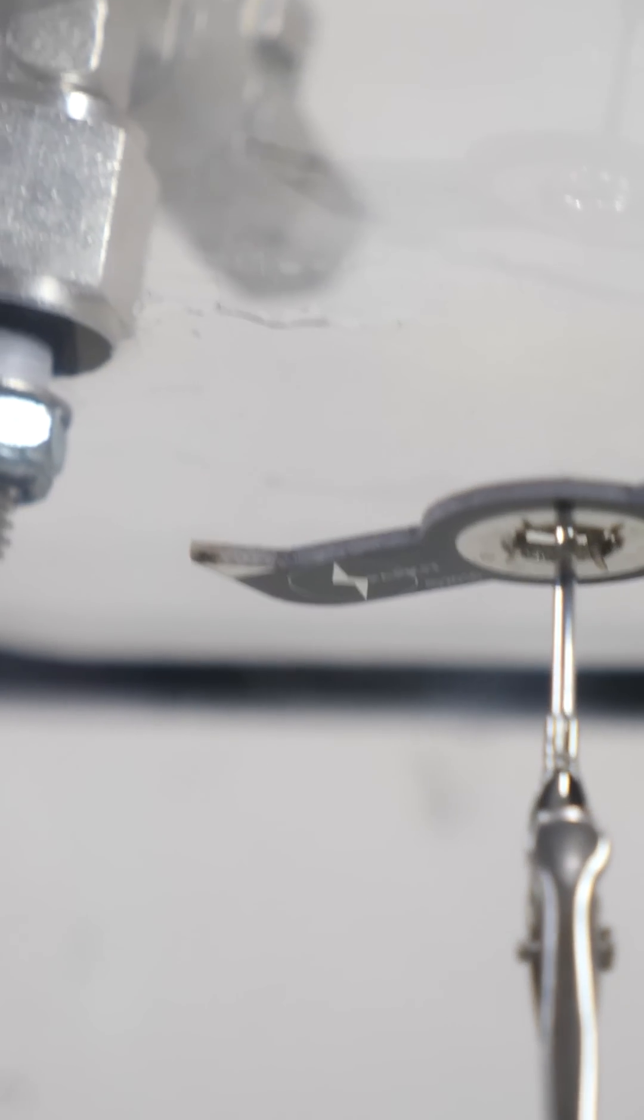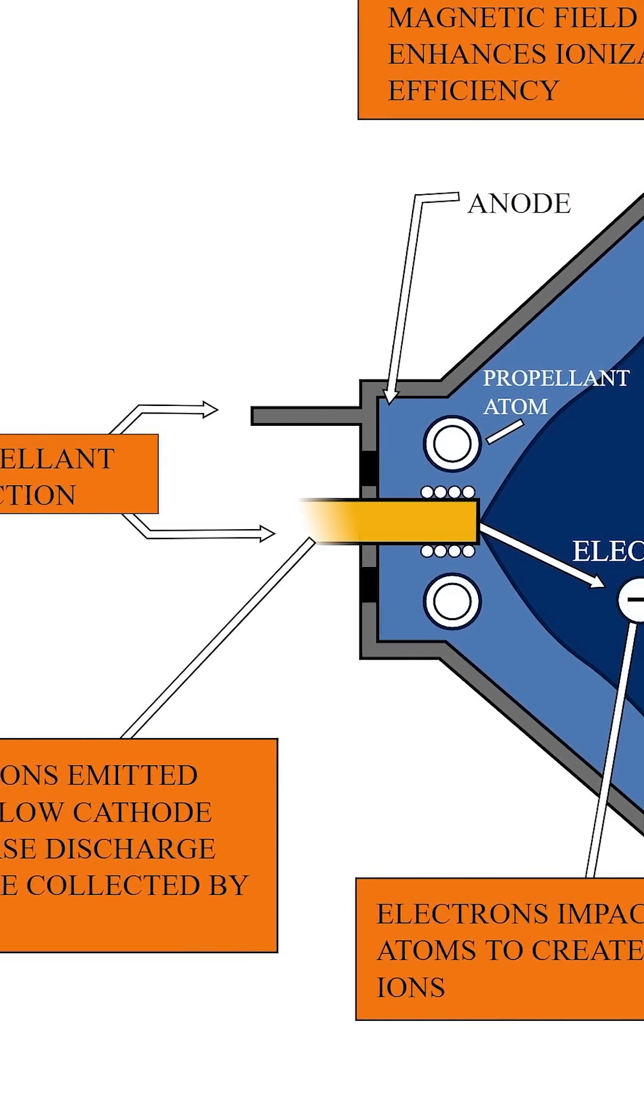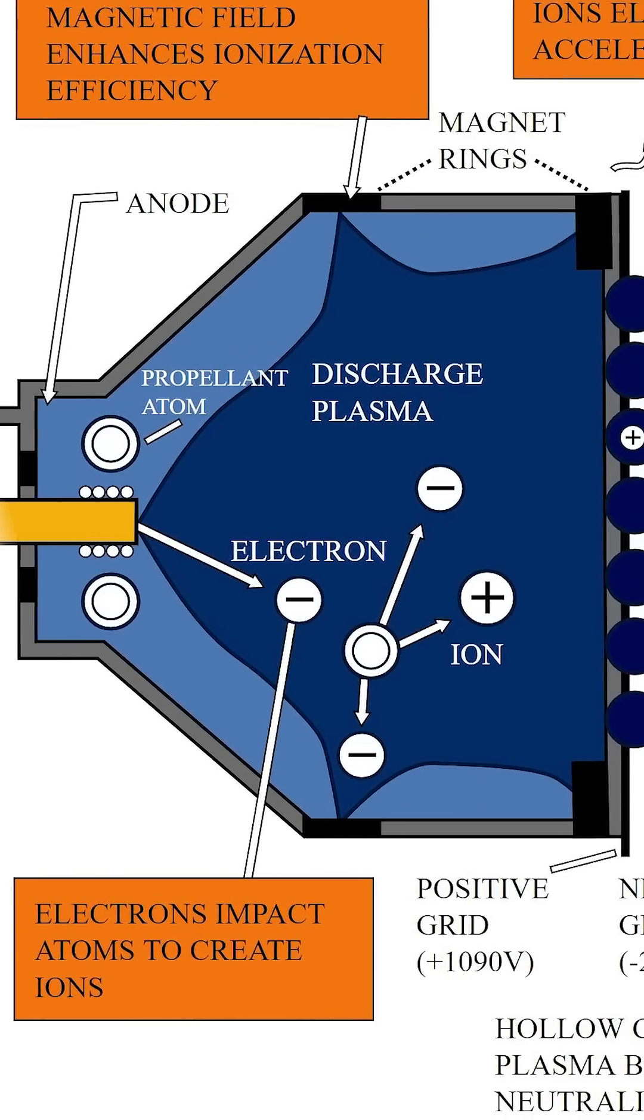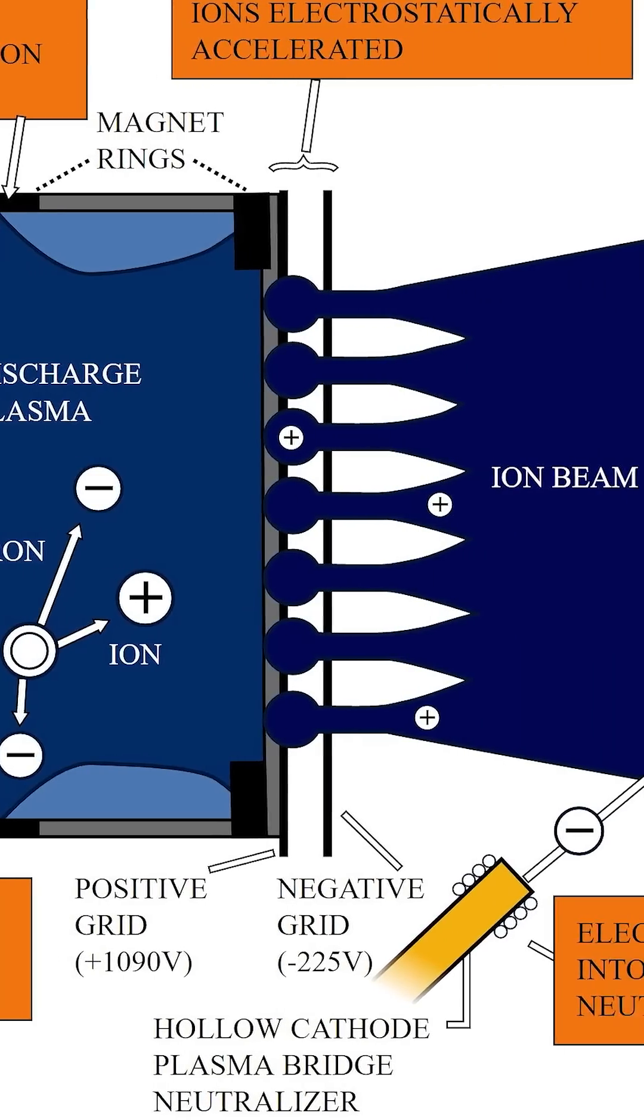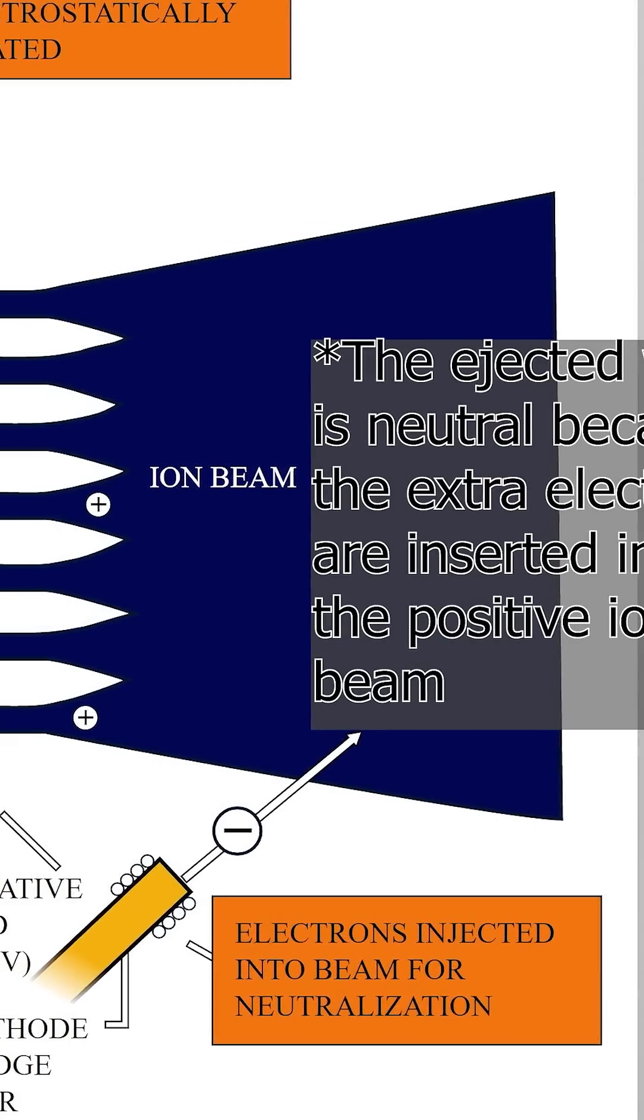So all you need to do to get an ion thruster to work in space is you need to bring the gas with you. There's no gas in space around you, so you supply the gas that's going to get propelled out the back. And the way it's going to get propelled is not through combustion like a typical rocket booster, but you're actually going to propel it using these electric forces and cause it to be ionized. Create this neutral wind that gets ejected out the back and it pushes the aircraft forward.